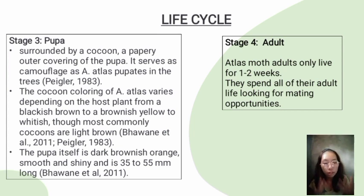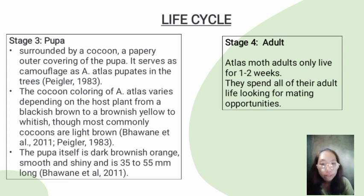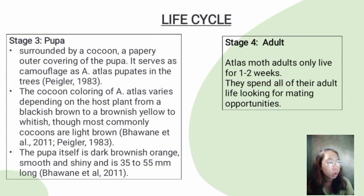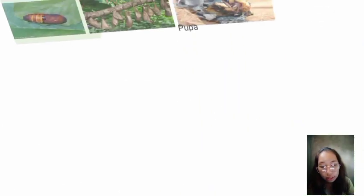Finally, stage 4 is the adult. Atlas moth adults only live for 1 to 2 weeks. They spend all of their adult life looking for mating opportunities. Once they become adults, a successful encounter results in mating for about 24 hours. After that, the female will fly off and lay her eggs — ranging from 300 to 400 eggs — on a suitable host plant. The moth dies after its first reproduction, meaning they are semelparous.